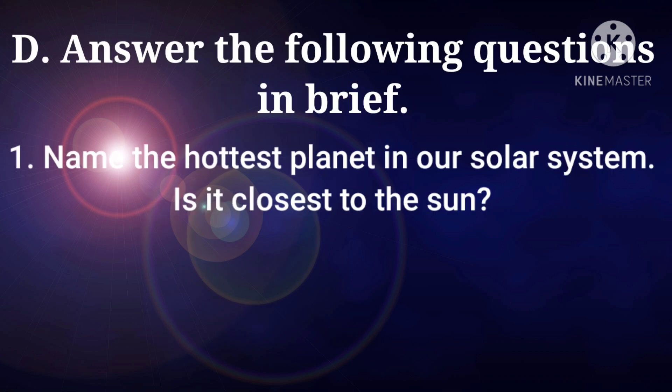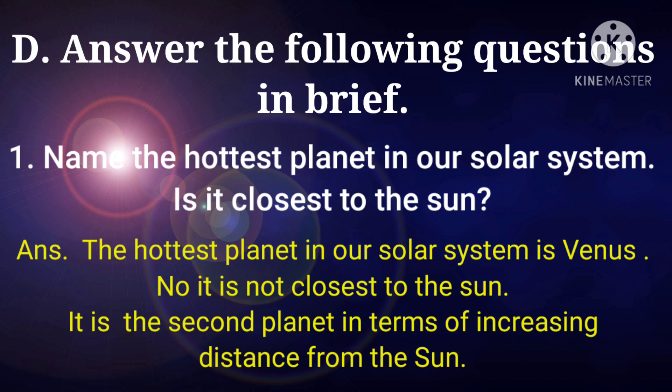Let's move to the next part, part D, answer the following questions in brief. And the first question is, name the hottest planet in our solar system. Is it closest to the sun? Answer to the question is, the hottest planet in our solar system is Venus. No, it is not closest to the sun. It is the second planet in terms of increasing distance from the sun.